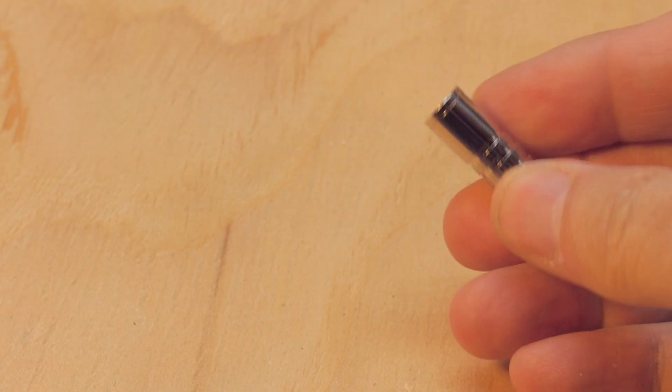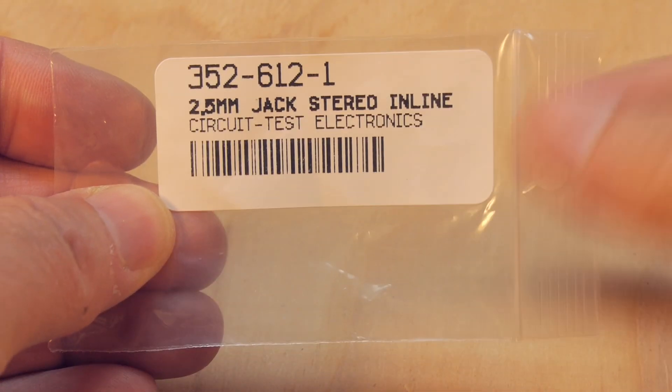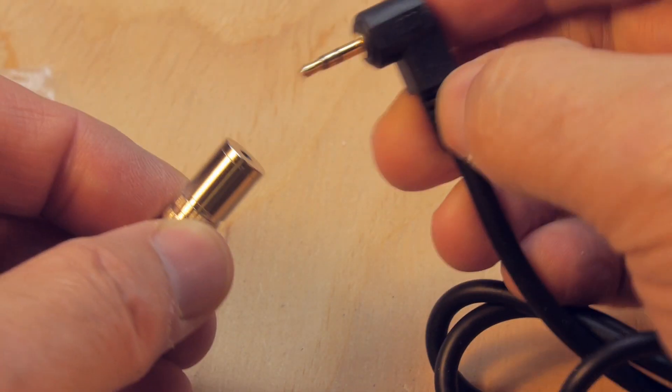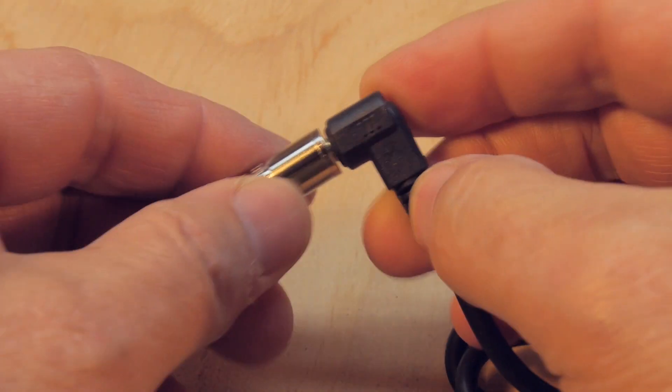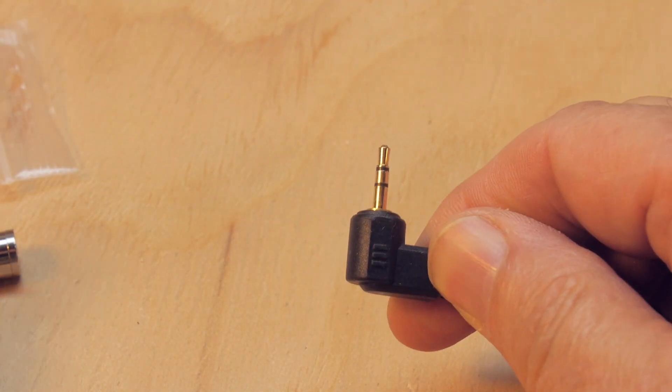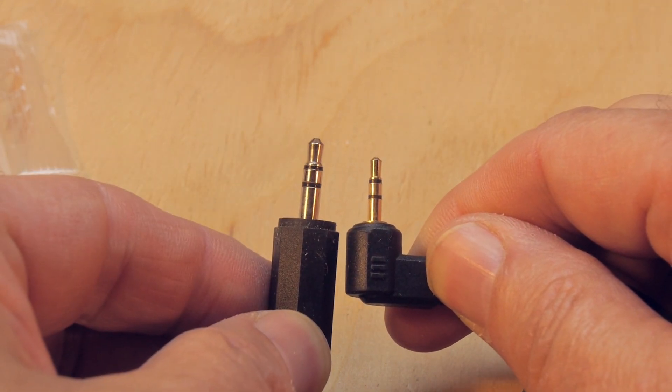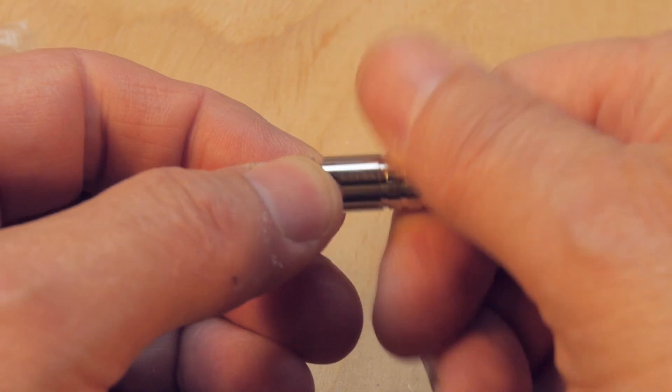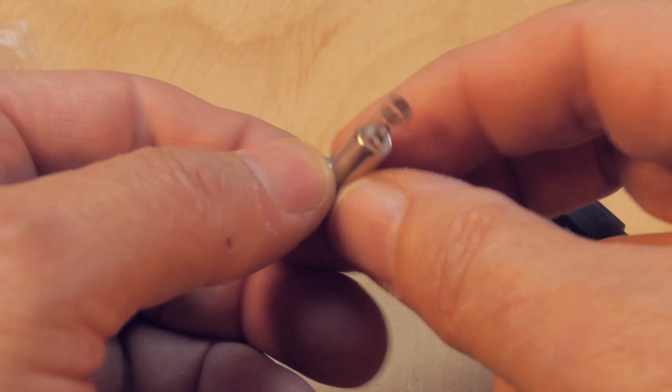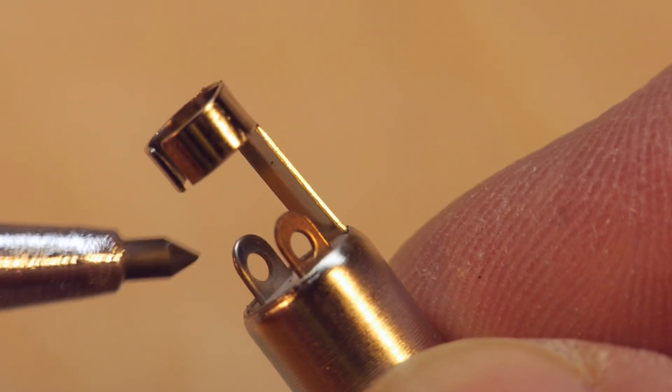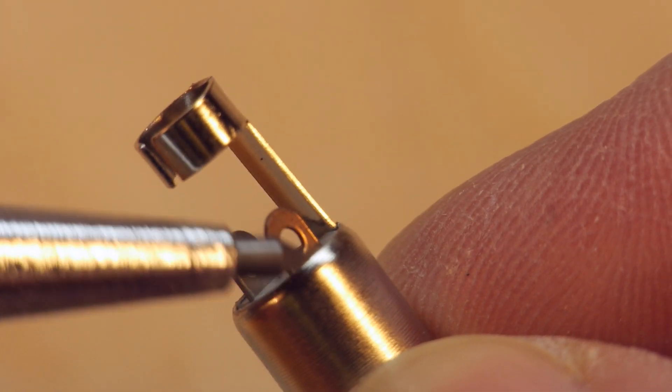So the jack I got is a 2.5mm stereo jack. You want to make sure you get the one that fits whatever plug is on your intervalometer. You want to be careful because some of these are very similar sizes and are easy to confuse. The one on the right here is a 2.5mm, and the left is a 3.5mm. The other thing to be sure is that you get a stereo jack. Some of these jacks have four conductors, so you want to make sure that the jack you get has the ground connector and the ring and the tip connector, three connectors.